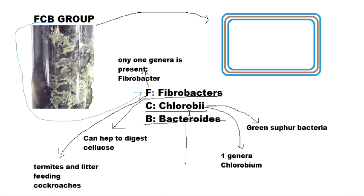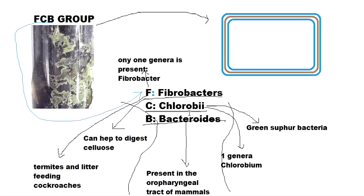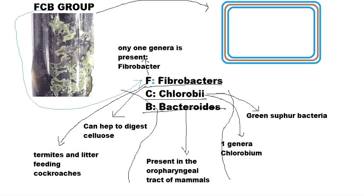Now, Bacteroidetes. Separating from Chlorobi and Fibrobacter, Bacteroidetes are present in the oropharyngeal tract of mammals — that is, the oral cavity and pharynx region — as well as in the gut of mammals. In these regions they are present as part of the normal flora, similar to the large bacterial populations in our oral cavity. They are also present on the skin, helping crowd out harmful bacteria.